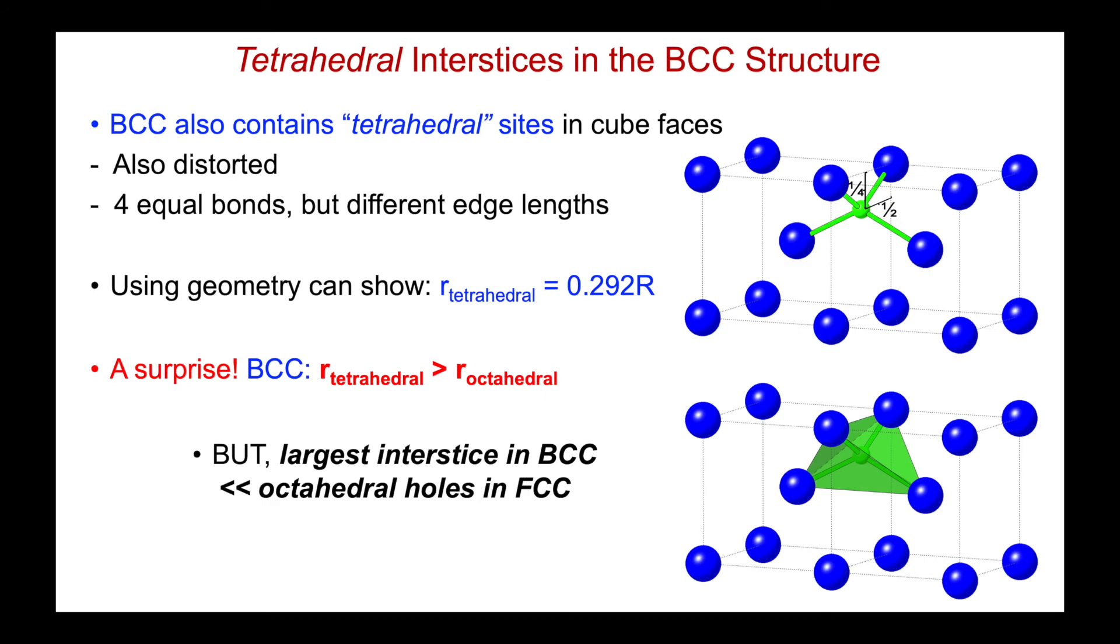But nonetheless, even the largest interstice in the BCC structure is much, much smaller than the octahedral holes in face centered cubic structures. And the bottom line is that carbon simply does not fit into BCC iron.